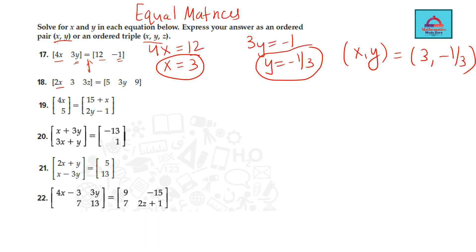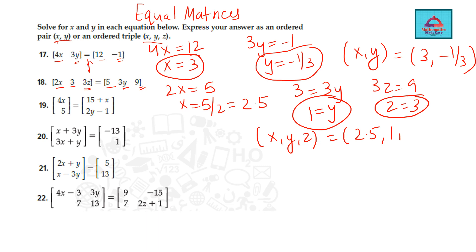Let's do the next one. 2x is 5. So x is 5 by 2, you can write in decimal also 2.5. 3 is equal to 3y, so y is 1. Then 3z is equal to 9, so z is 3. So here the ordered triple is x, y, z: 2.5, 1 and 3.